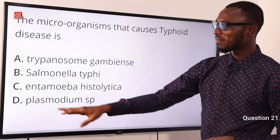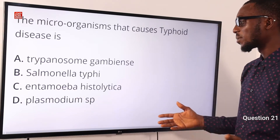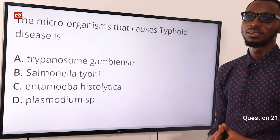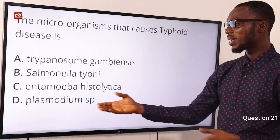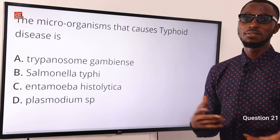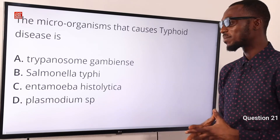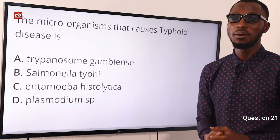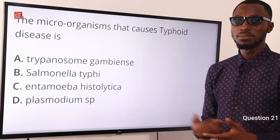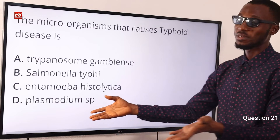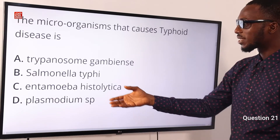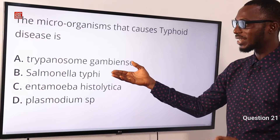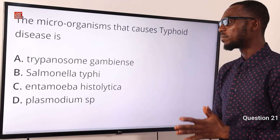Option C is Entamoeba histolytica — this causes amoebic dysentery. We have Plasmodium sp., that is for different plasmodium: Plasmodium falciparum, Plasmodium vivax, Plasmodium malariae, and what have you — this is just for malaria. So: option C is for amoebic dysentery, option B is for typhoid, option A is for sleeping sickness. The correct option is option B, Salmonella typhi.